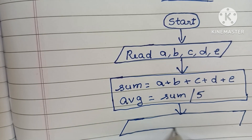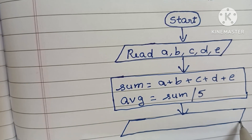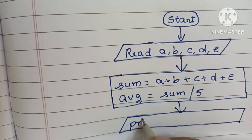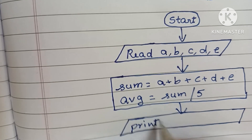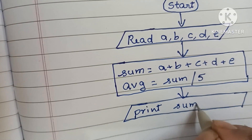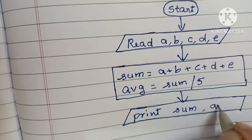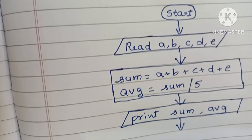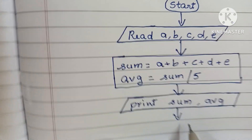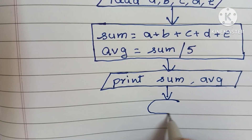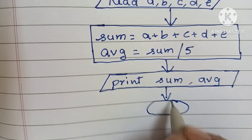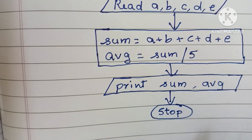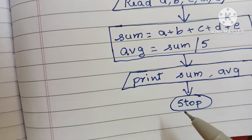Next, we have to print the output values. Output values are written within a parallelogram shape, and within that we print the sum value and average. Next, we stop the flowchart using the stop statement, which is written within an oval shape.